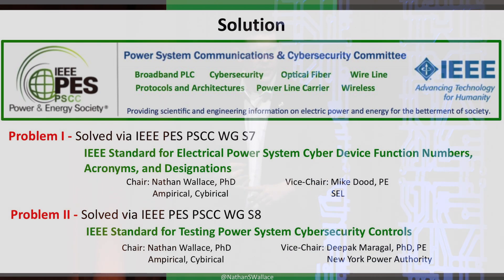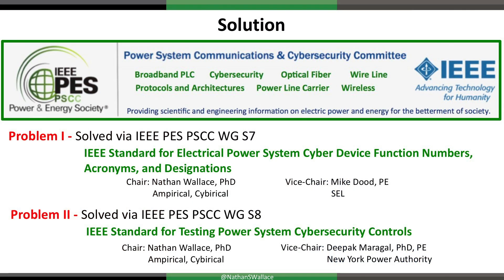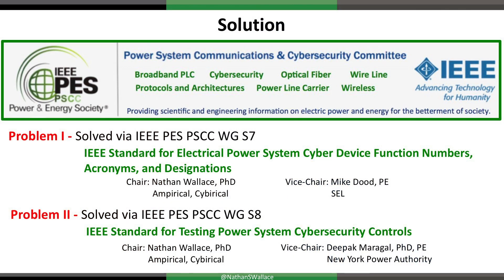This is a solution that actually just came from a recent meeting — a week-long meeting where about 300 engineers within the power industry come together across about 100 different groups focused on reliability, resiliency, redundancy, protection and control, cybersecurity, and communications. The DMP3 working group falls under the technical committee on power system communications and cybersecurity. There are two new groups that started about a year to a year and a half ago: one creating standards for how to document cybersecurity on a drawing, and one for testing. The vice chairs are Mike Dude from SEL and Deepak from NYPA.